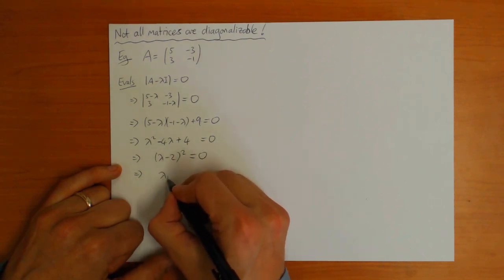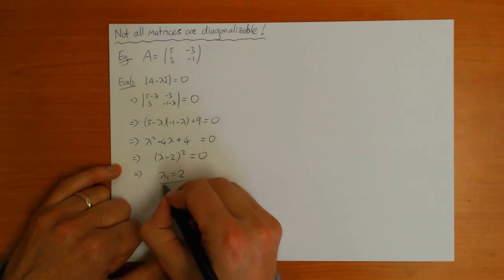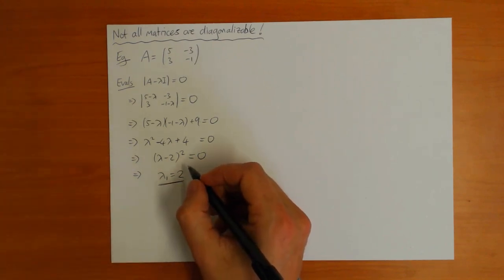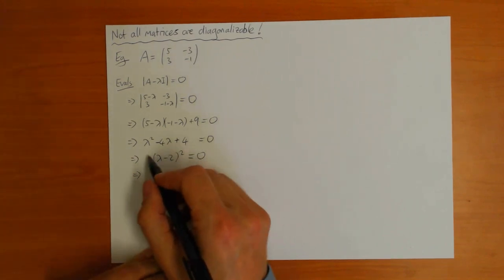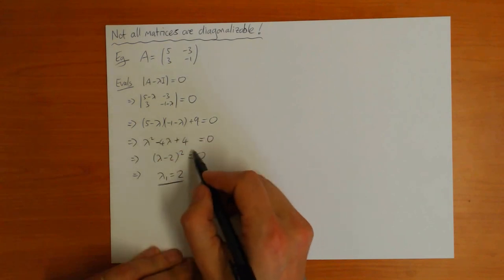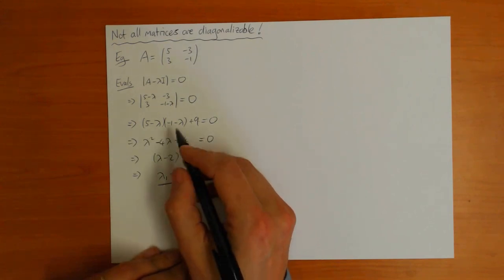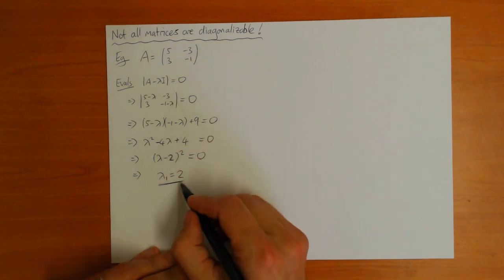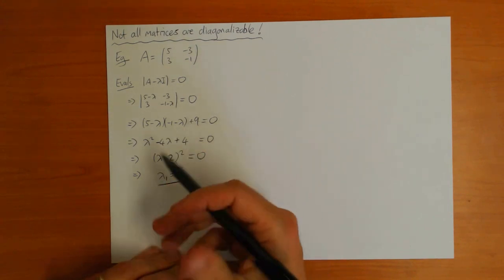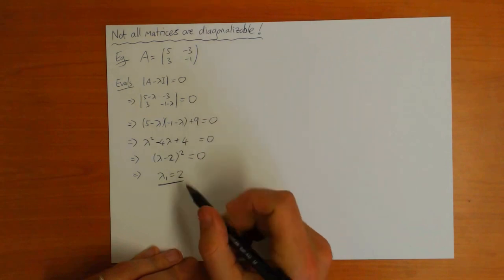Lambda times lambda minus 2 squared equals 0. So you see, first of all, you only have one eigenvalue, which is lambda equals 2. This can happen if the polynomial, the characteristic polynomial, has a double solution. So here lambda equals 2 is a double solution of this polynomial. In this case, you can have less eigenvalues than n.